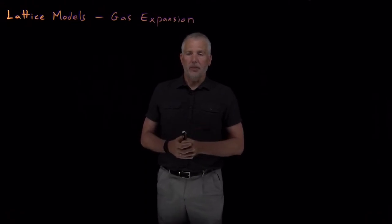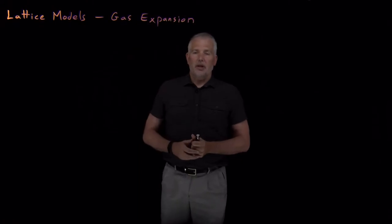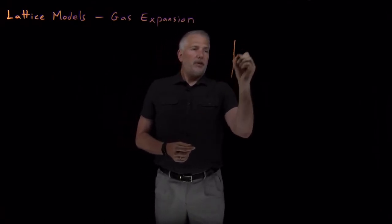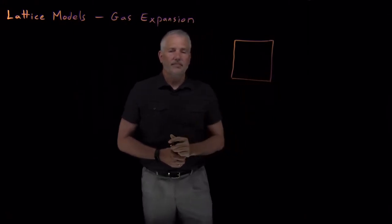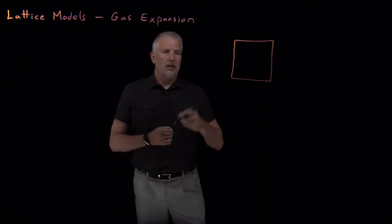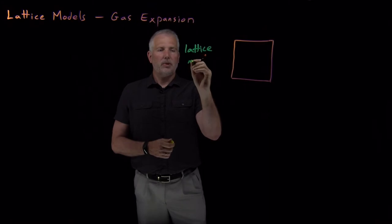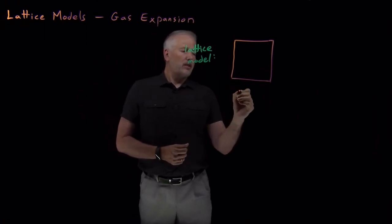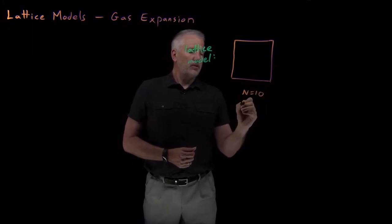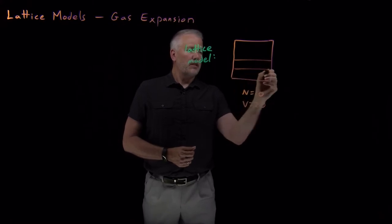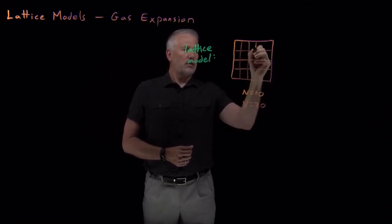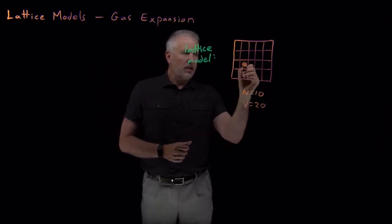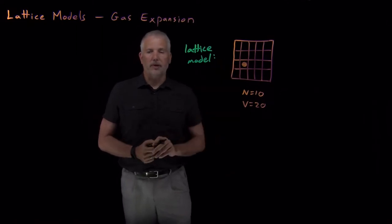We want to start using microstates and macrostates to make real predictions about chemical systems. To do that, we'll think about gases expanding. Let's say we have a box of some volume containing a gas, and we'll represent that gas with a lattice model. Lattice models divide the system into a grid — for example, 10 molecules in a box divided into 20 smaller boxes, each small enough that no more than one molecule can fit at a time.